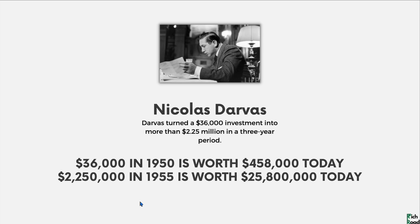Also notice: you would have heard that he turned a $36,000 investment into $2.25 million in 3 to 5 years. Adjusted for inflation, $36,000 in 1950 is worth $450,000 today — and the end value would be around $26 million. He started well. He was not someone who came to markets with $1,000 or 50,000 rupees expecting to turn it into 8 crore. People like Nicholas Darvas started with a solid financial background.